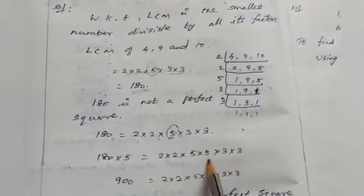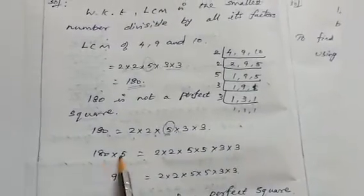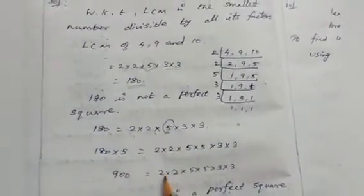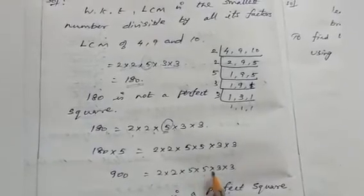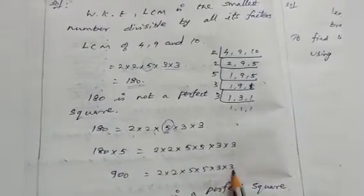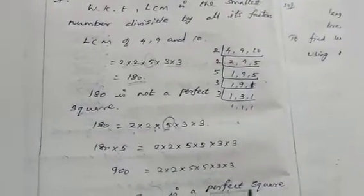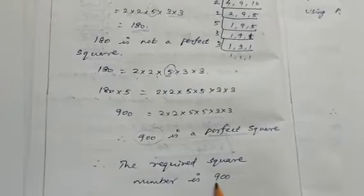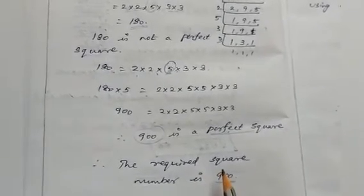Since 5 has no pair, we multiply 180 by 5 to get 2 × 2 × 5 × 5 × 3 × 3. So 180 × 5 = 900. Now 900 = 2 × 2 × 5 × 5 × 3 × 3, and 900 is a perfect square. Therefore the required smallest square number is 900.